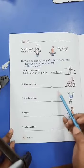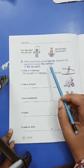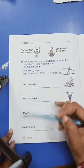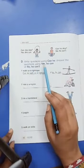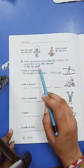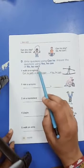Assalamualaikum grade 3 students, how are you all? Hope you have done all your previous work. Now today's homework is exercise D, page number 12. Write questions using can he, answer the questions using yes he can or no he can't.